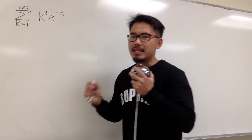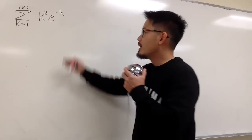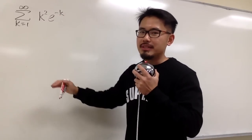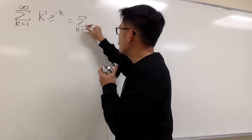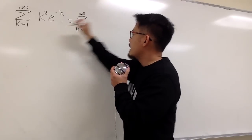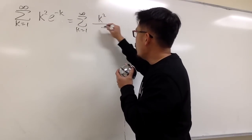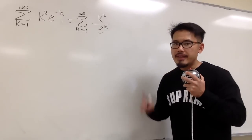We see that we have the negative exponent, what do we do? As usual, we can bring this down to the denominator. So this is the same as looking at sigma when k goes from 1 to infinity, k squared on the top over e to the positive k.